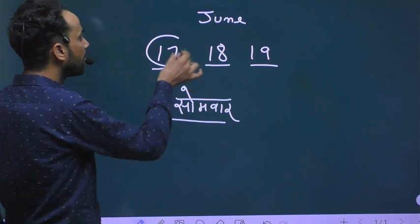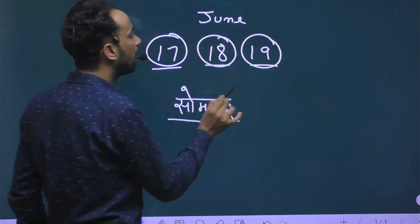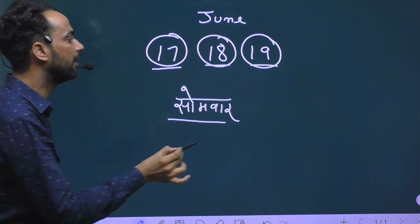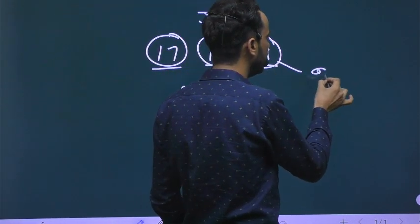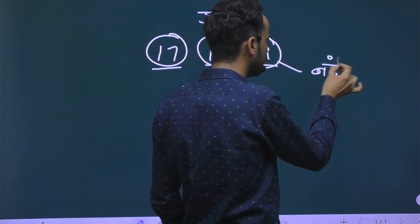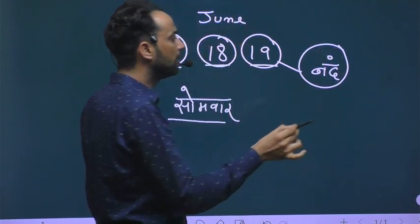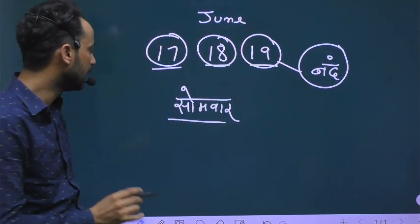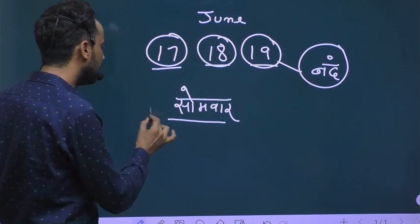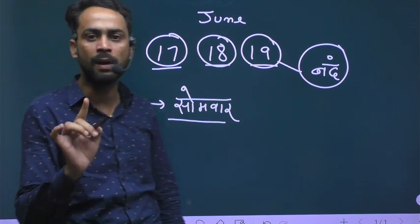On June 17, June 18, and June 19, all coaching centers have been closed for 3 days because of the ongoing Agnipath Yojana movement and protest. Diwan Singh Academy will also be closed for 3 days and will reopen on Monday.